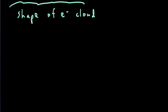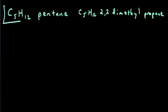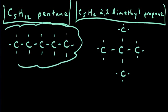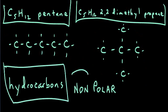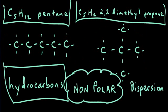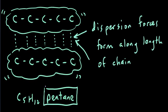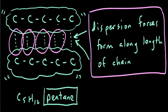In addition to size, the shape of the electron cloud also influences dispersion force strength. Comparing two C5H12 isomers — pentane and 2,2-dimethylpropane — both nonpolar hydrocarbons with the same molar mass, dispersion forces are the only attractive forces present. Pentane has a straight chain where dispersion forces form along its full length. 2,2-dimethylpropane has a more compact structure with less opportunity for electron cloud contact, generating fewer and weaker dispersion forces.